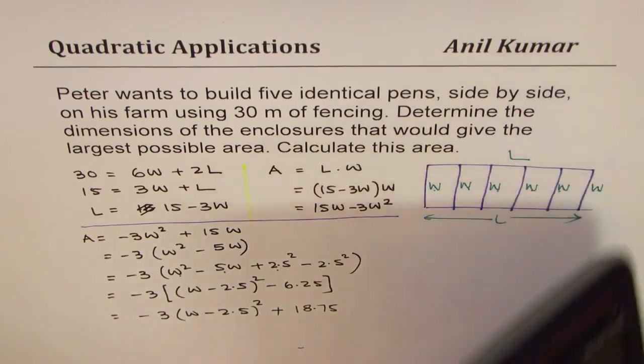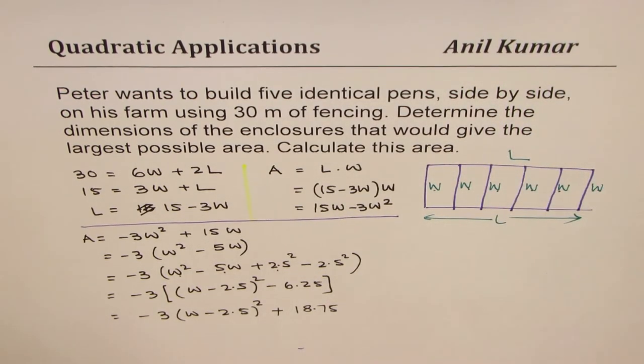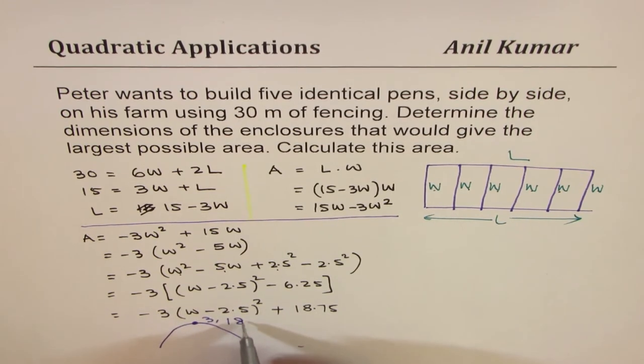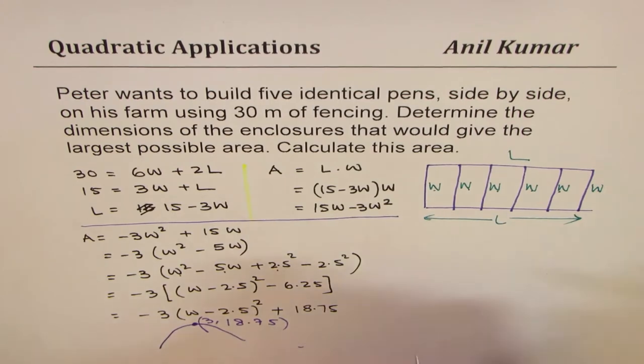Once you have vertex form, parabola opening downwards, we know this point is at (2.5, 18.75). That gives you the answer.